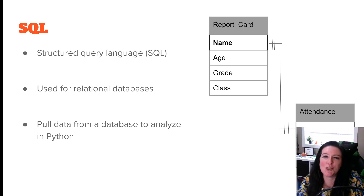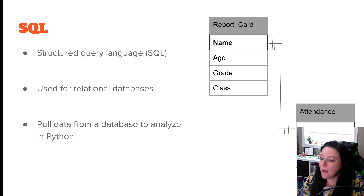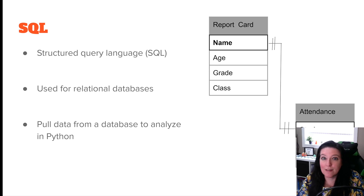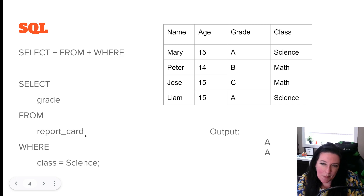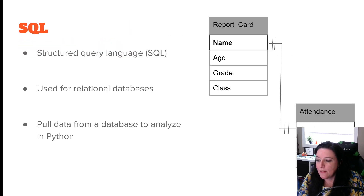In our entity relationship diagram, 'name' is also a foreign key because it appears in our attendance table, where the primary key is also the student's name. We also have the number of absences and which sport the student is involved in, because some absences might be tied to their sport. Here is the data — the names, ages, grades, and classes — that makes up our report card table with 'name' as the primary key.